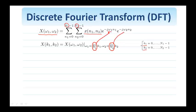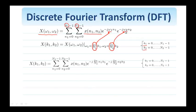So if I substitute 2π over n1 for omega 1 and 2π over n2 for omega 2 here, I end up with this expression, which is the forward discrete Fourier transform, DFT. It gives me a description of the image in the discrete frequency domain, k1, k2, where k1, k2 range over one period, as shown here.